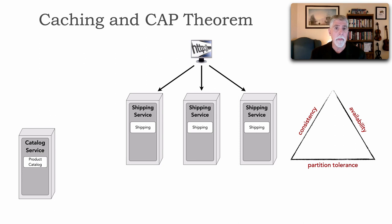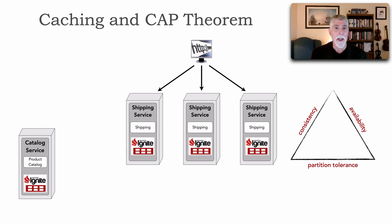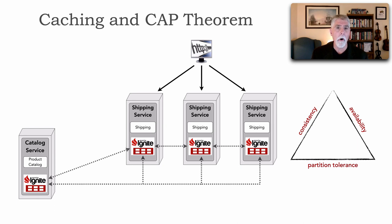Let's start with the first topology — in-memory replicated caching, as shown in lesson 78. I'm going to use Apache Ignite, an in-memory data grid. Within each instance of my service, Ignite runs within that process and the data is stored in the process itself. All instances communicate with one another, forming a data grid where the data is kept in sync between all instances of that cache.